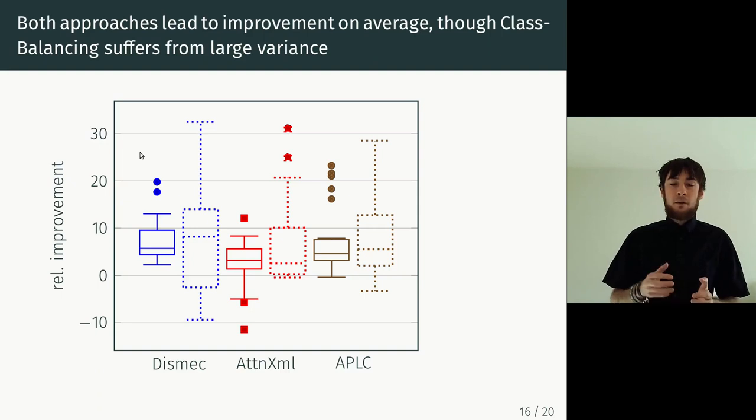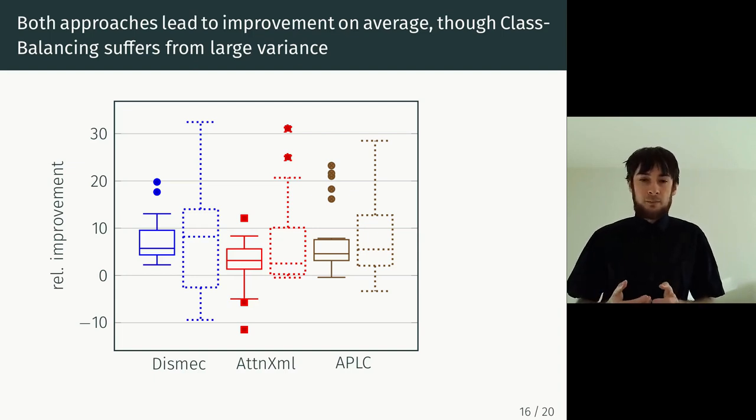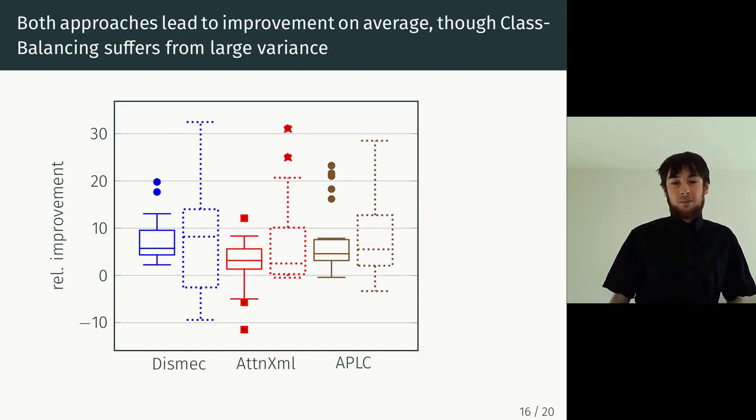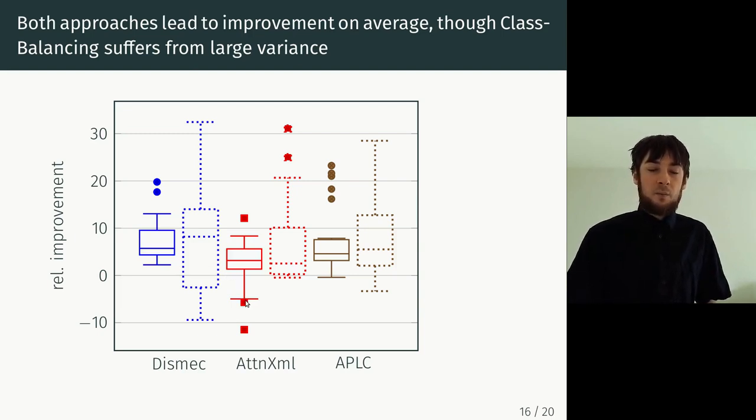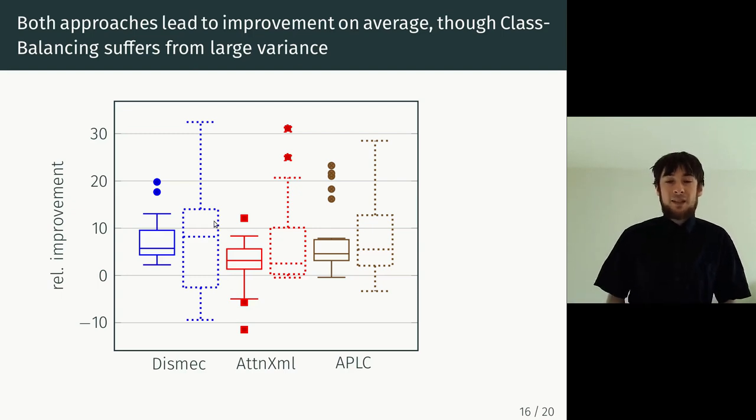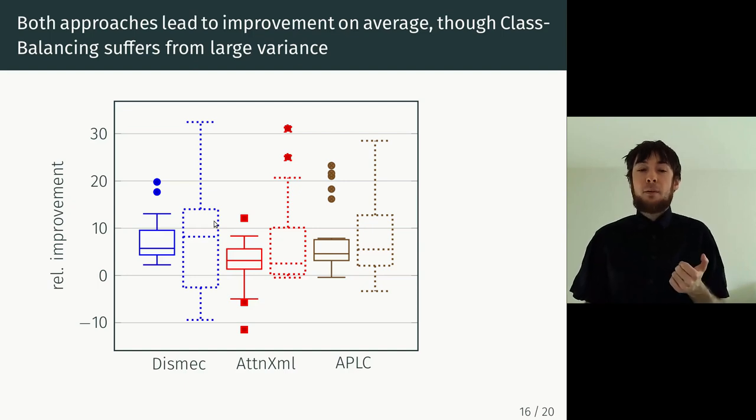So here the solid lines correspond to the method where we've only inserted the factor for missing labels and the dotted lines if we also do class balancing. And you can see that zero corresponds to the original method. So all these methods have resulted in an increase in median performance and typically also in a very strong increase. Unfortunately, if you introduce also class balancing, there is an increase in the variance of the results. So there are also some situations where for a specific metric and dataset combination, the results get worse. So at this point, we can recommend to test both, maybe with a few different hyperparameters also and use cross-validation to select the best one. And then you have a high chance to get a strong improvement and might even get super lucky with the dataset and get a really, really strong improvement.